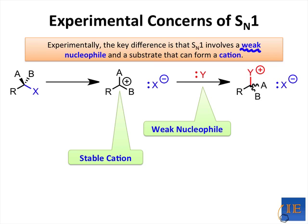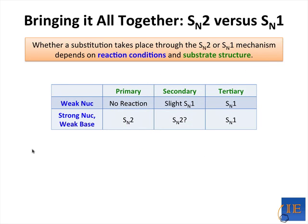Because only tertiary or resonance-stabilized cations are stable enough to be reasonable under SN1 conditions. All in all, we can say that only tertiary or resonance-stabilized electrophiles can perform SN1, and except in very rare cases, SN1 only occurs in the presence of a weak nucleophile. Now let's bring it all together and summarize the dependence of substitution mechanism on the structures of the electrophile and nucleophile.